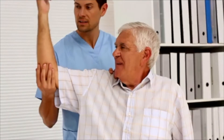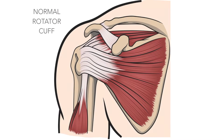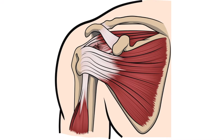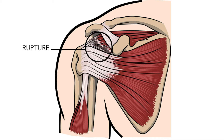Rotator cuff injuries can range from simple irritation to complete tendon ruptures. Tears to the rotator cuff are common and are classified by the amount of damage. A partial tear means one side of your tendon has become somewhat frayed. A full thickness tear, sometimes called a complete tear, describes a hole or slit in the tendon, much like what would be created by running a knife lengthwise down a rope. A rupture is the most serious injury — this means that your tendon has been torn in two.